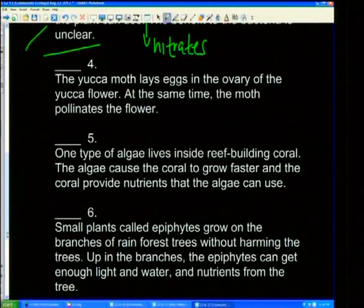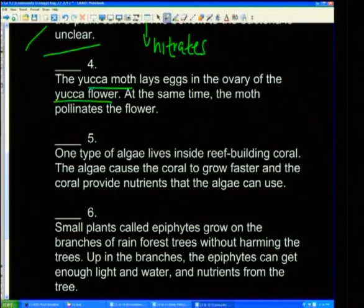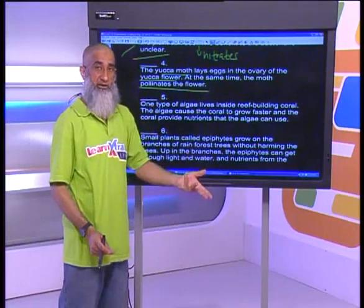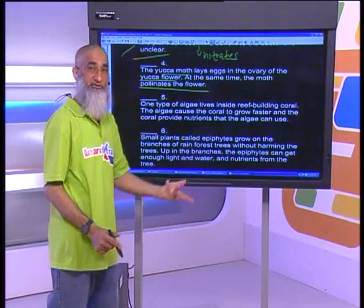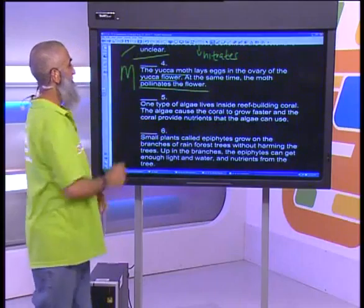The yucca moth lays eggs in the ovary of a yucca flower. At the same time, the moth pollinates the flower. The flower benefits by getting pollinated, and the yucca moth gets its eggs protected. So: mutualism.